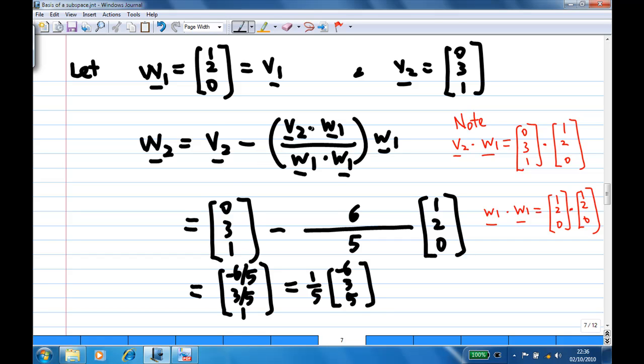How about v2 dot w1? v2 is 0 3 1, w1 is 1 2 0. So as we do the dot product, we know 0 times 1 is 0, and 3 times 2 is 6, and 1 times 0 is 0.